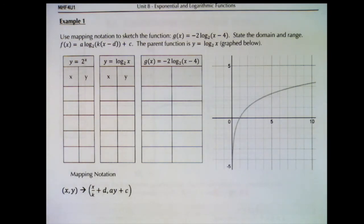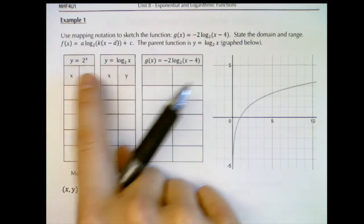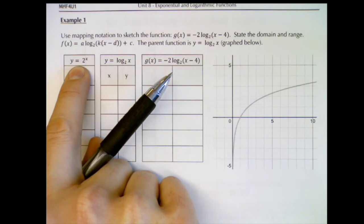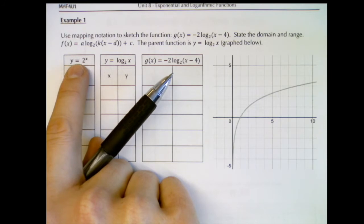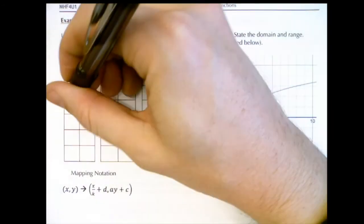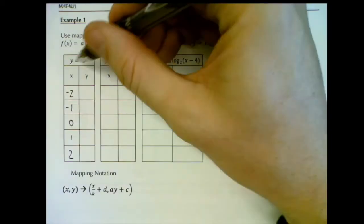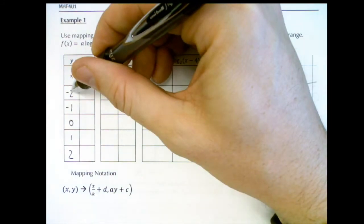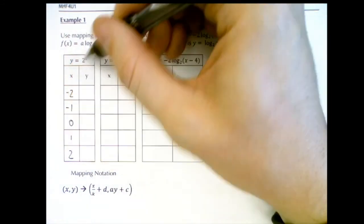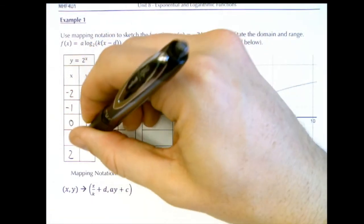I'll show you how to build the parent function's table even if you don't have the graph. To get the log base 2 table, start with the inverse exponential table — we know how to do that. Use x values of negative 2, negative 1, 0, 1, 2, then raise base 2 to those exponents to get y values of one quarter, one half, 1, 2, and 4.